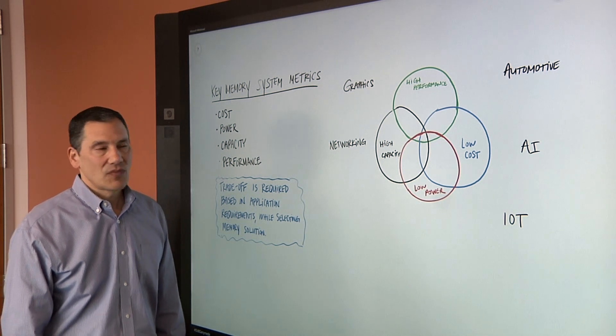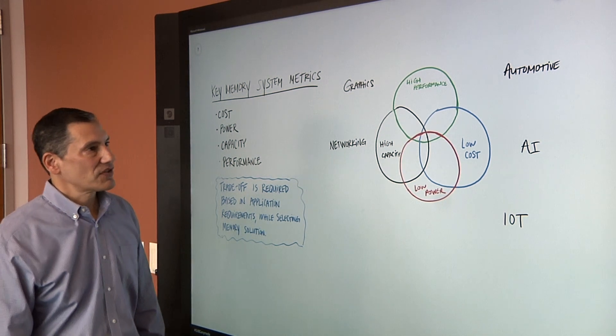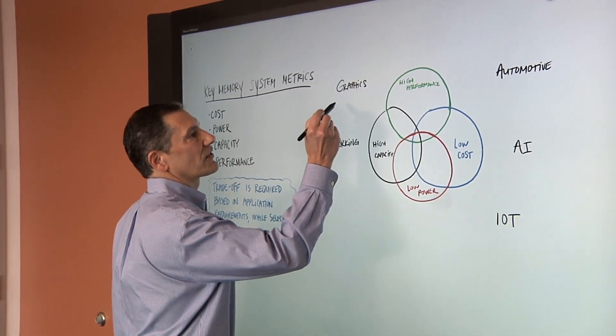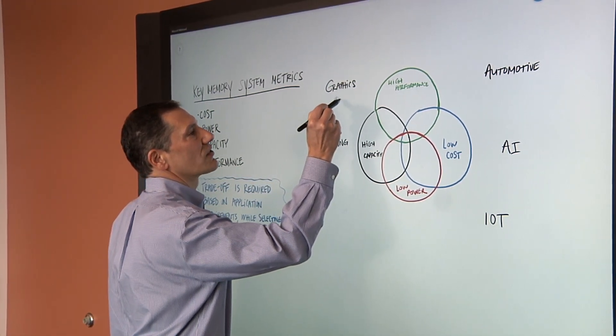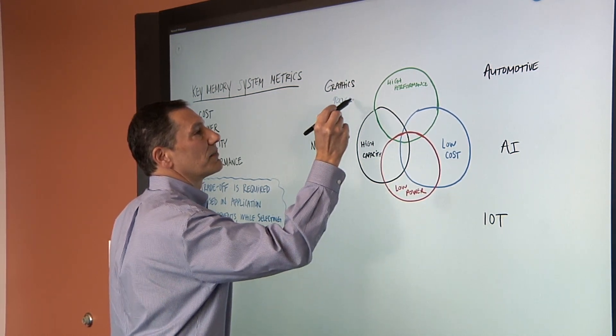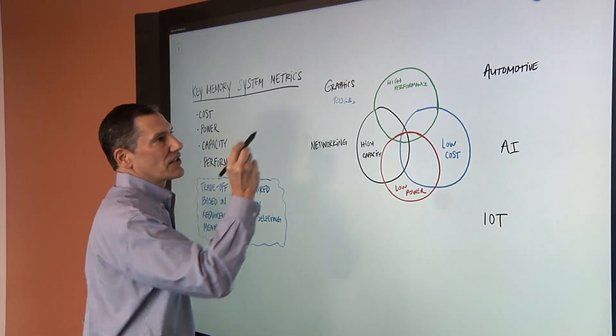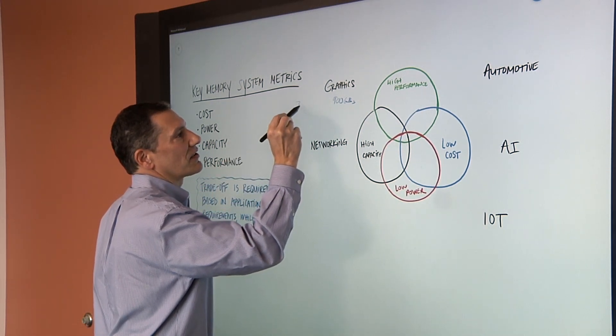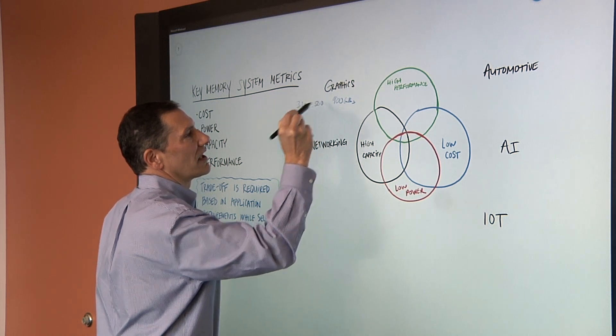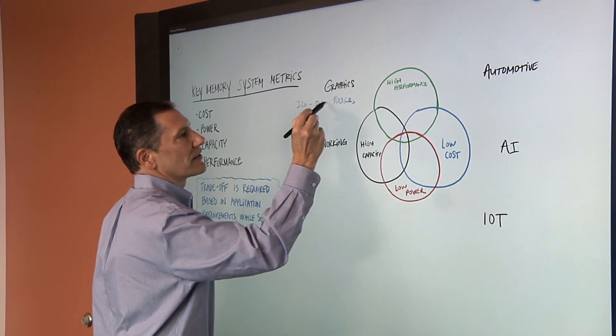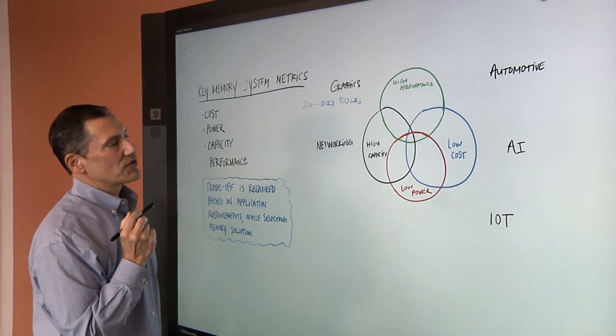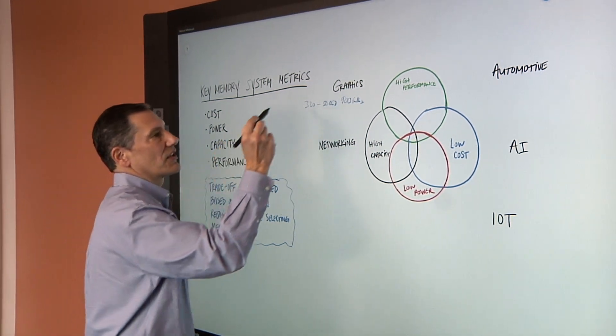So let's drill down into some of the applications. What are the performance metrics for each one? As I mentioned, graphics is certainly at the highest end. High-end graphics cards are in the 900 gigabyte per second range, and you've got cards that are in the 320 to 500 range. So these are all gigabytes per second. If you look at what are the solutions I can get here, you have GDDR5 going to now GDDR6.